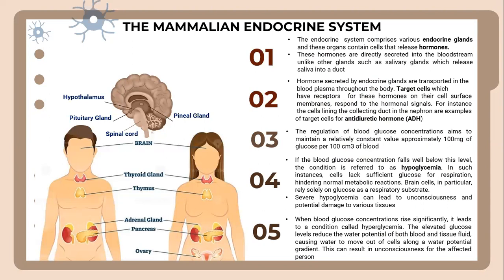The mammalian endocrine system. The endocrine system comprises various endocrine glands, and these often contain cells that release hormones. These hormones are directly secreted into the bloodstream, unlike other glands such as salivary glands which release saliva into a duct. Hormones secreted by endocrine glands are transported in the blood plasma throughout the body.